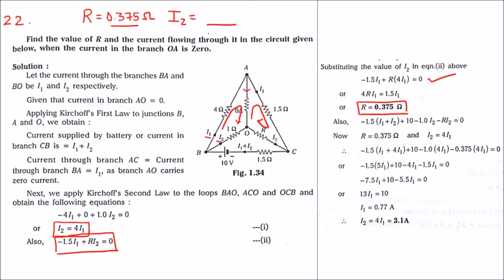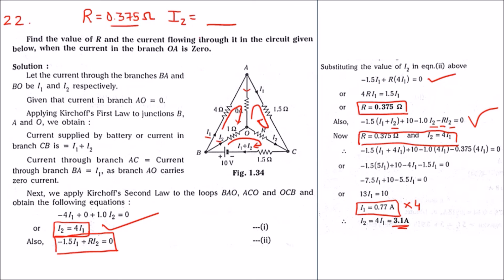Now we apply Kirchhoff's Second Law to the remaining loop: minus 1.5·i1 plus i2 plus 10 minus 1.1·i2 minus R·i2 equals zero. Substituting the known values of R and simplifying, we find i1. Substituting i1 into Equation 1, i2 equals 4 times i1, giving us i2 equal to 3.1 amps. So the value of R is 0.375 ohms and the current flowing through the resistor is 3.1 amps.